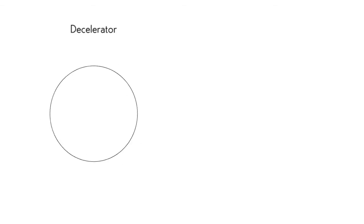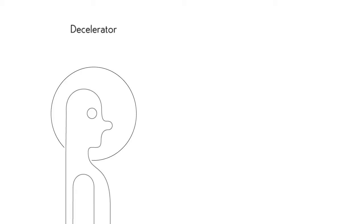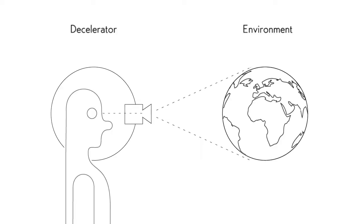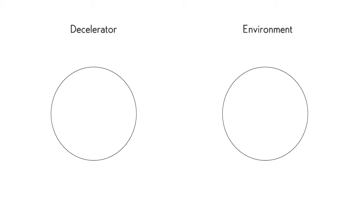The decelerator filters the technically reproducible sensors and reproduces the environmental impressions in its inside in a decelerated way. A slow motion for real life.